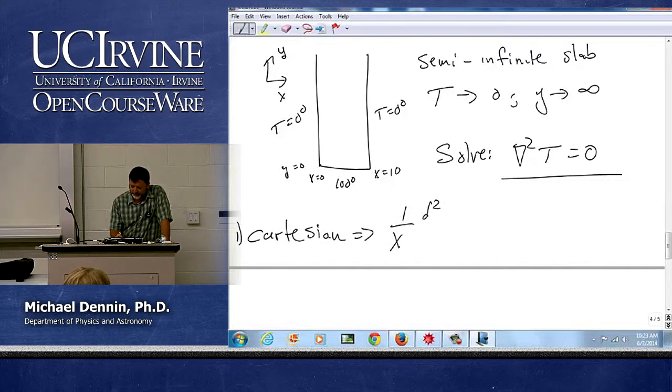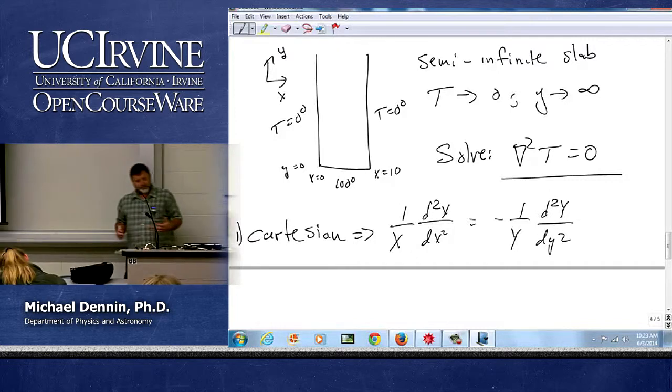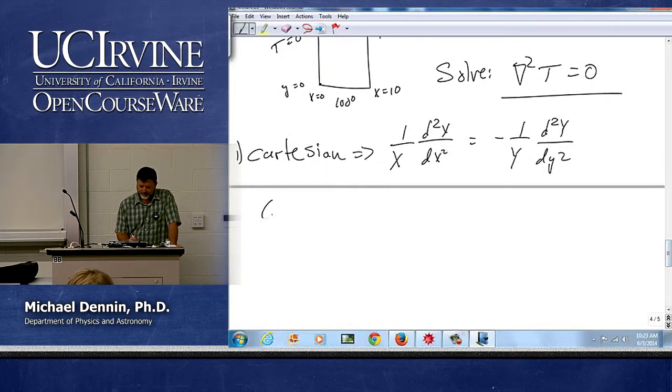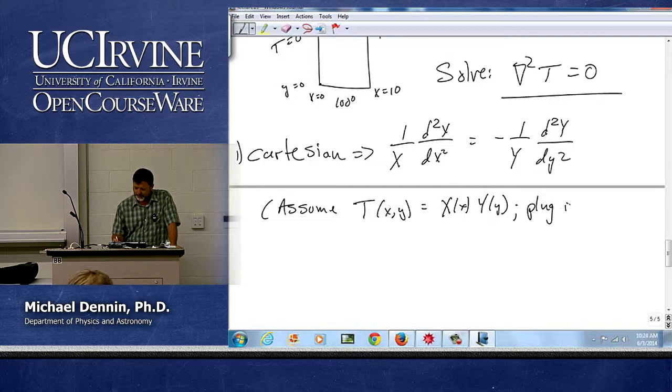And we get our one over x, d squared x, dx squared equals minus one over y, d squared y, dy squared. So, I skipped a few steps there. What did I skip? Right. So, I'm going to assume T of x and y equals X of x, Y of y. Plug in and divide by T.